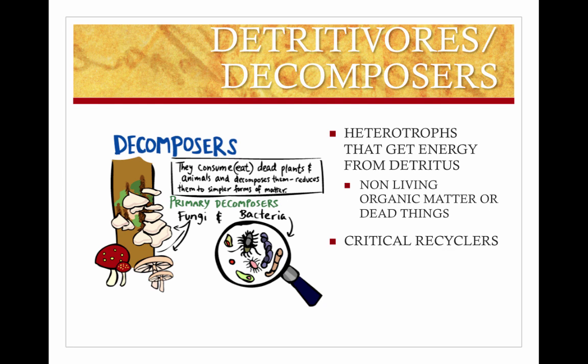Decomposers are extremely important in the environment. They get their energy from detritus, which is the non-living organic matter made of dead things. These are also considered heterotrophs. Once you have things breaking down, it almost forms something like a mulch, and that's actually what detritus is.